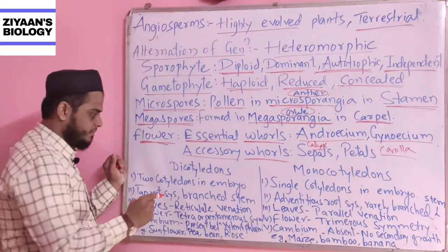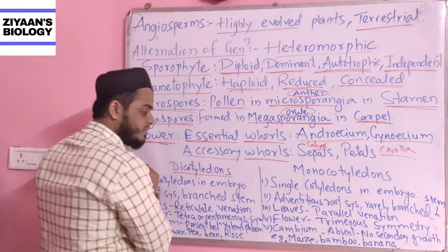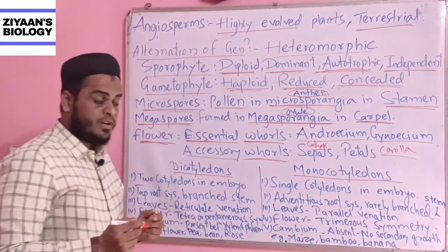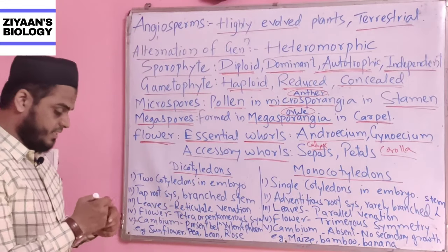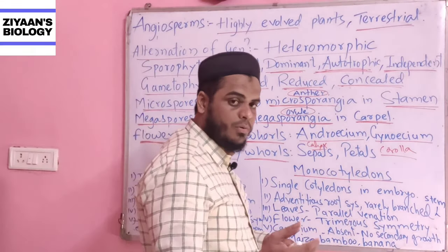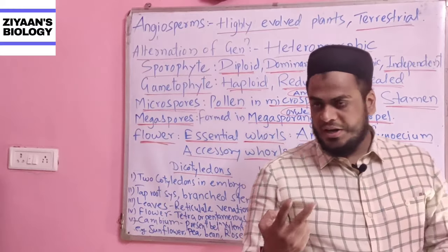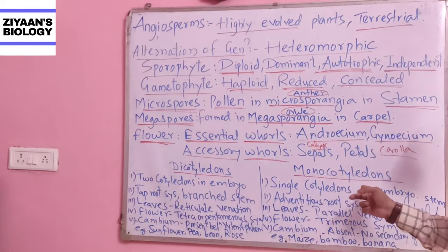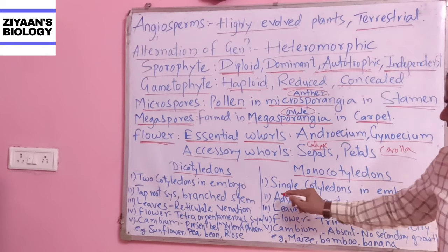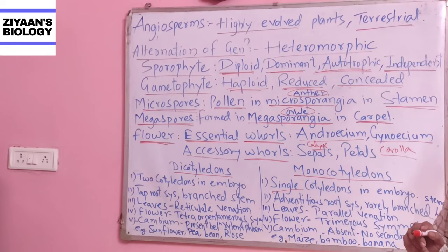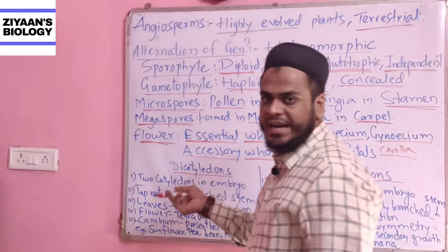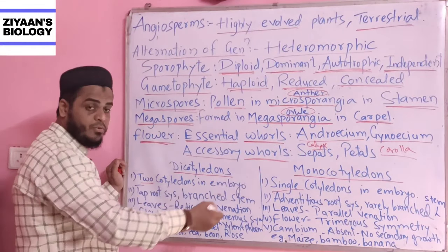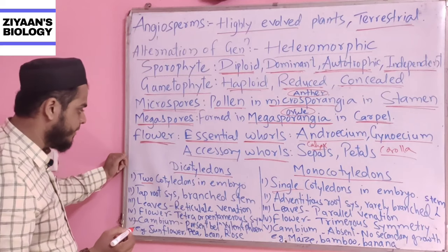Division Angiosperm is divided into two classes: dicotyledons and monocotyledons. As the word suggests, dicotyledon will have two cotyledons in the embryo, whereas monocotyledon will have only a single cotyledon in the embryo.